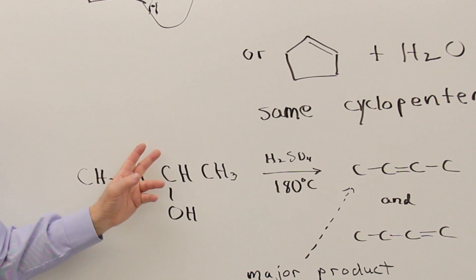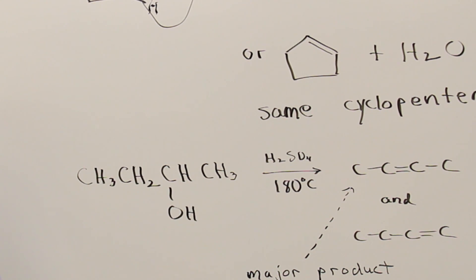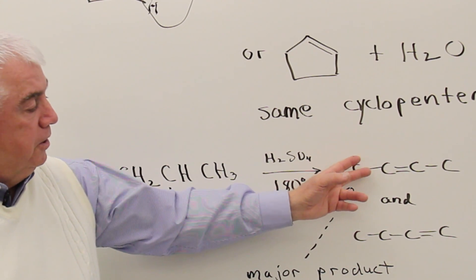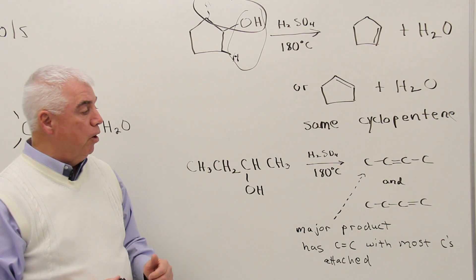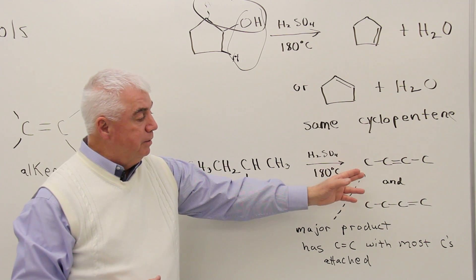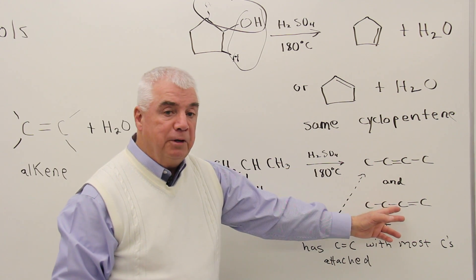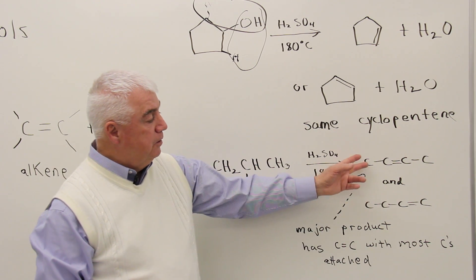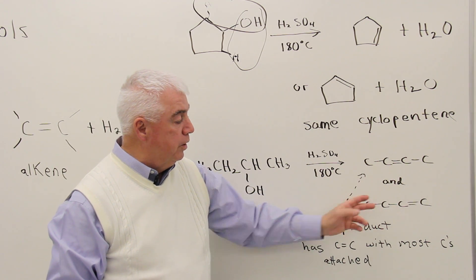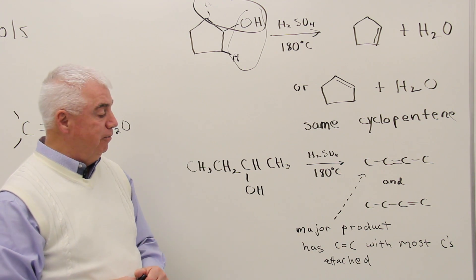But that isn't always the case. Here in this structure, we've got 2-butanol. As the OH is removed, it could take with it a hydrogen from this position or the third carbon, so there are two possible products. I've shown the carbon skeletons on the right-hand side just to make it a little easier to see the carbon-carbon double bond. It turns out that one product is favored, giving rise to a rule that helps us predict the major product when a dehydration of an alcohol occurs.